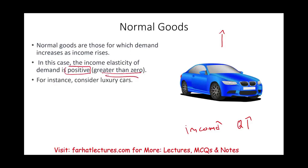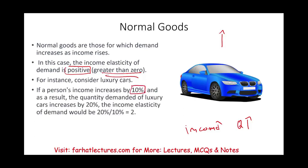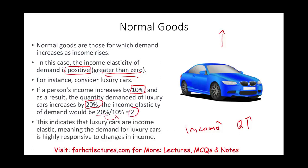A good example is luxury cars. If a person's income increases by 10% and the quantity demanded for luxury goods increases by 20%, the income elasticity — change in quantity divided by change in income — is 2. This indicates that luxury cars are income elastic. As you make more money, you want to buy more of that good. Your income only increased by 10% but demand increased by 20%. Most goods are normal goods because most goods, assuming you want to buy more of them, are called normal goods.